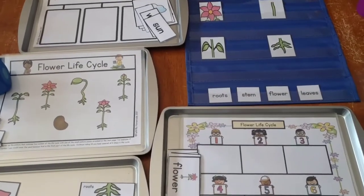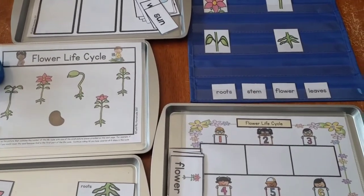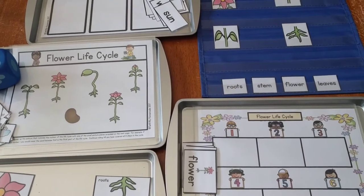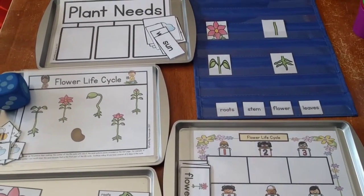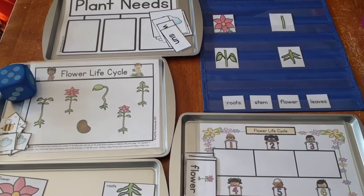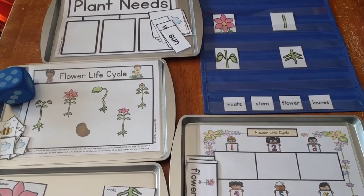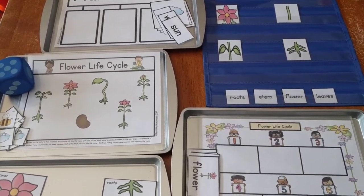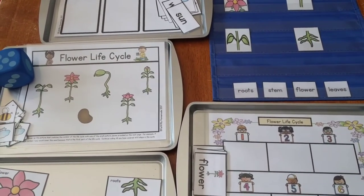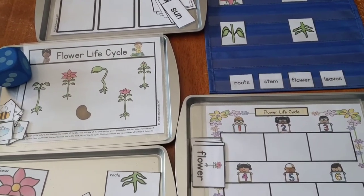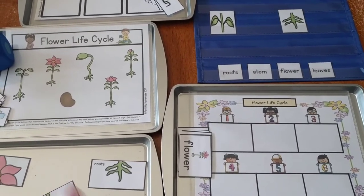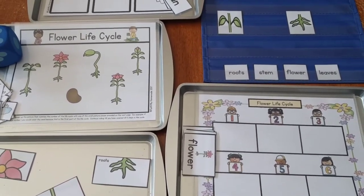Hey guys, Amanda here from Faithfully Homemade, and today I'm going to show you two different science centers that I have. The first one I'm going to go through is some plant learning - about plants, the plant life cycle, plant needs, things like that, and the parts of a plant. I have a couple different activities for that one, and then the other one I'm going to show you after this is all about animals and sorting animals.